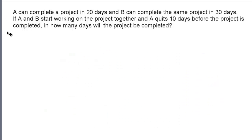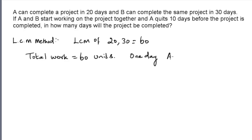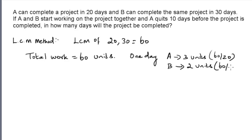Let us take an example problem and apply the LCM method to solve it. A can complete a project in 20 days and B can complete the same project in 30 days. If A and B start working together and A quits 10 days before the project is completed, in how many days will the project be completed? We take the LCM of 20 and 30, which is 60 — this should be assumed as the total unit of work. In one day, A can do 3 units (obtained by 60 divided by 20) and B can do 2 units (obtained by 60 divided by 30).